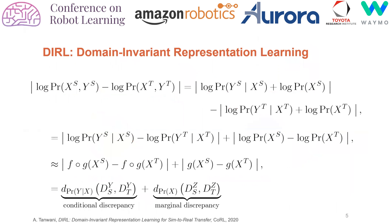To this end, we present a domain-invariant representation learning approach that semantically aligns both the marginal and the conditional distributions by leveraging upon a few labeled examples of the target domain. The joint discrepancy across domains is minimized by minimizing the sum of both the marginal and the conditional discrepancy across domains.